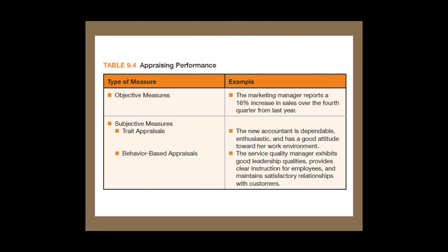In the table reproduced from your textbook, you can see objective and subjective measures side by side. An example of an objective measure: a marketing manager reports a 16% increase in sales over Q4 from last year. A subjective trait-based example: the new accountant is dependable, enthusiastic, and has a good attitude. A behavior-based example: the service quality manager exhibits great leadership, provides clear instructions, and maintains satisfactory relationships with customers.